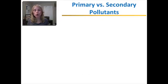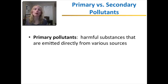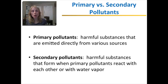Now we'll go through some main types of air pollutants. Air pollutants can be separated into primary versus secondary pollutants. Primary pollutants are harmful substances emitted directly into the atmosphere, as opposed to secondary pollutants, which form when primary pollutants react either with each other or with atmospheric components, such as water vapor.